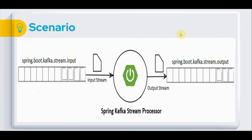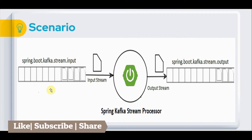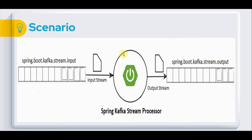The scenario I'm going to illustrate: I have one input topic called spring-boot-kafka-stream-input with messages of type String. I'm going to build a stream processor topology with Spring Boot that reads data from this input topic, applies transformation logic — filtering some events and mapping values into a different form — and the resultant output will be pushed into another topic called spring-boot-kafka-stream-output.